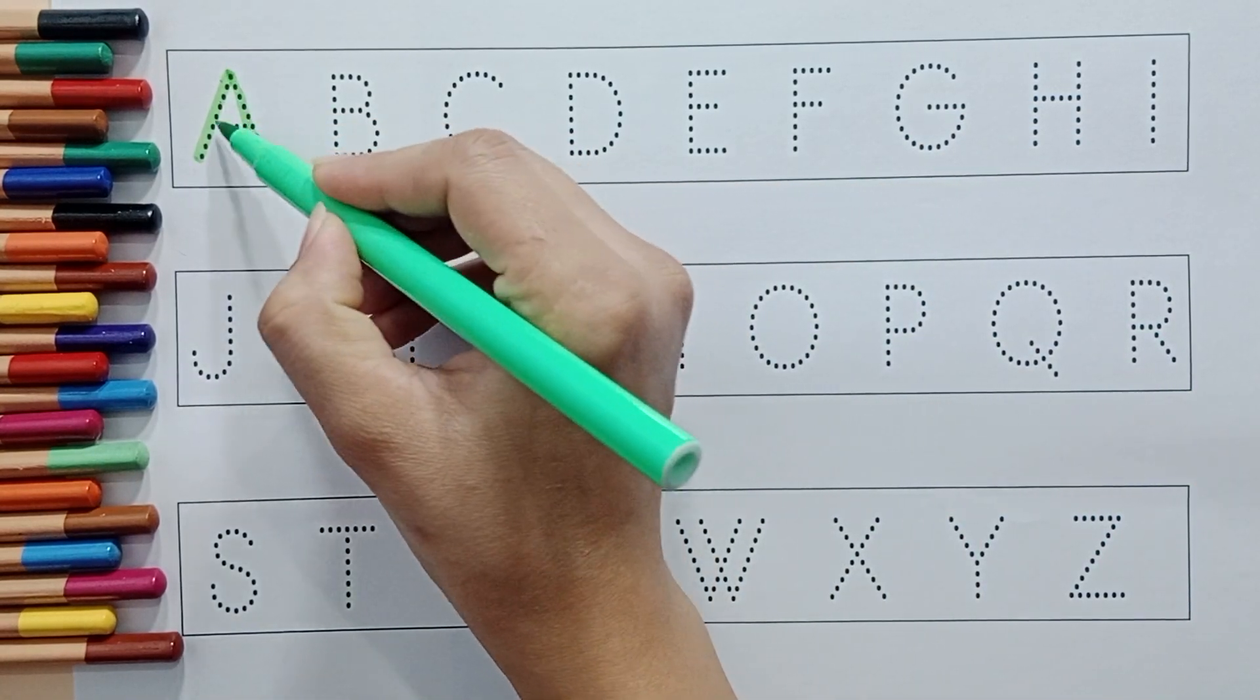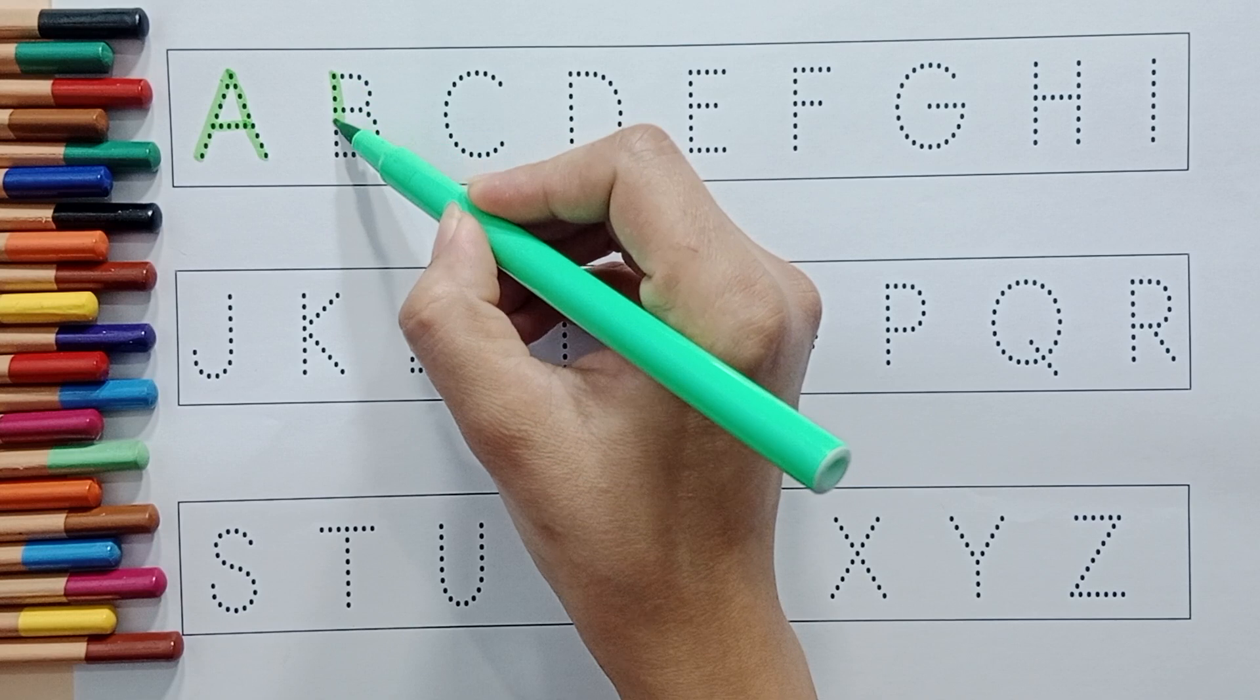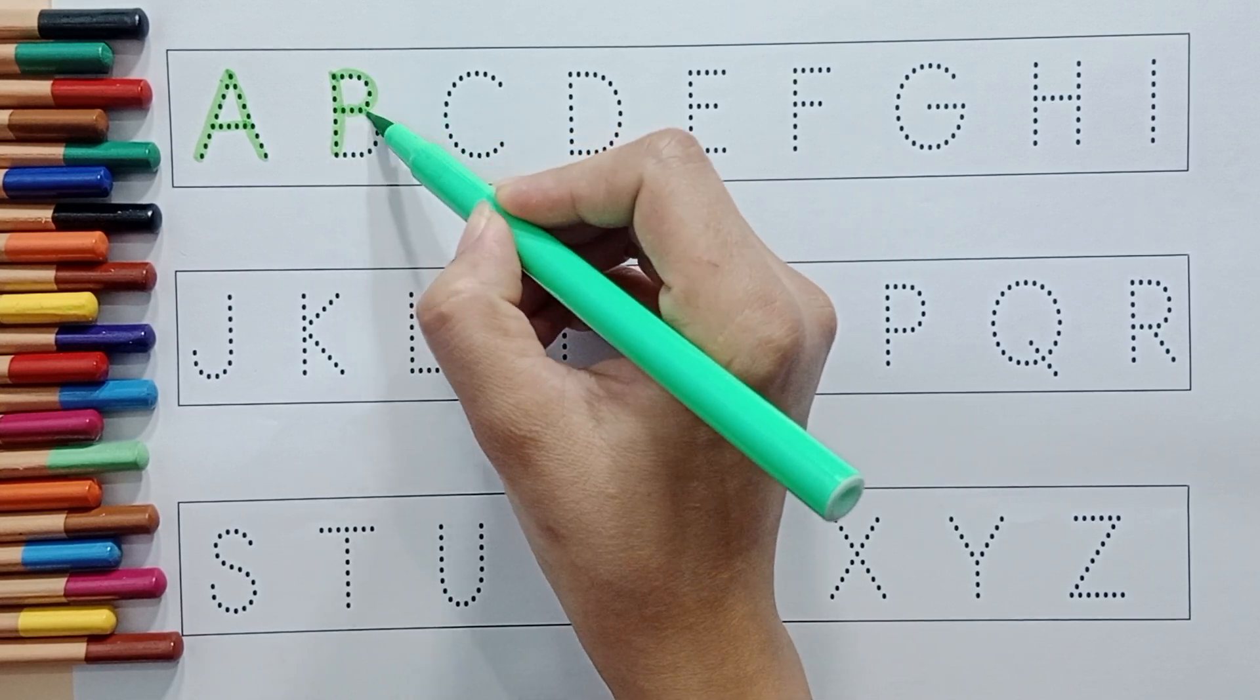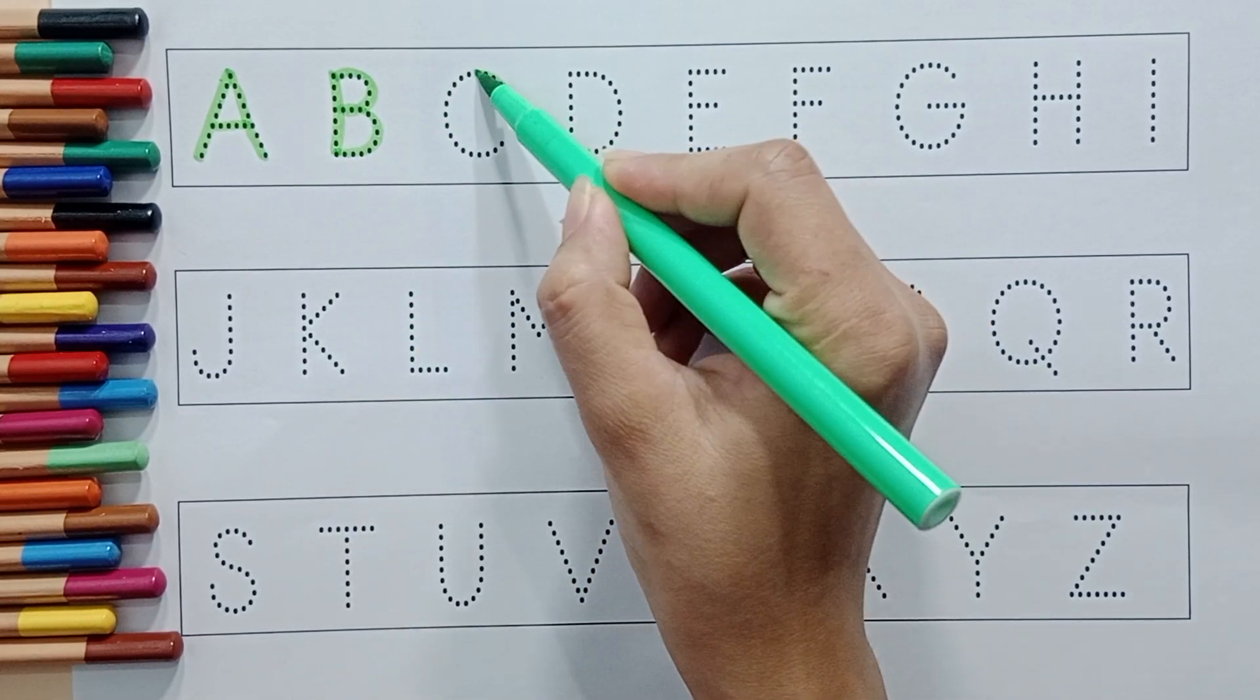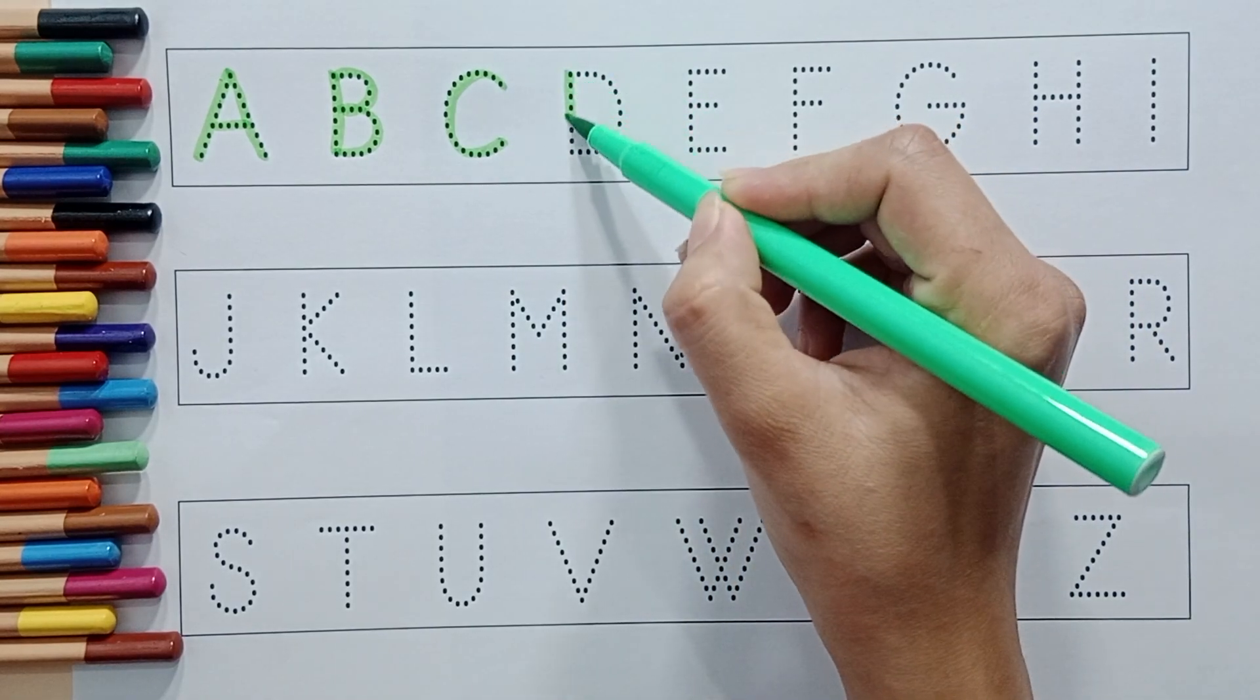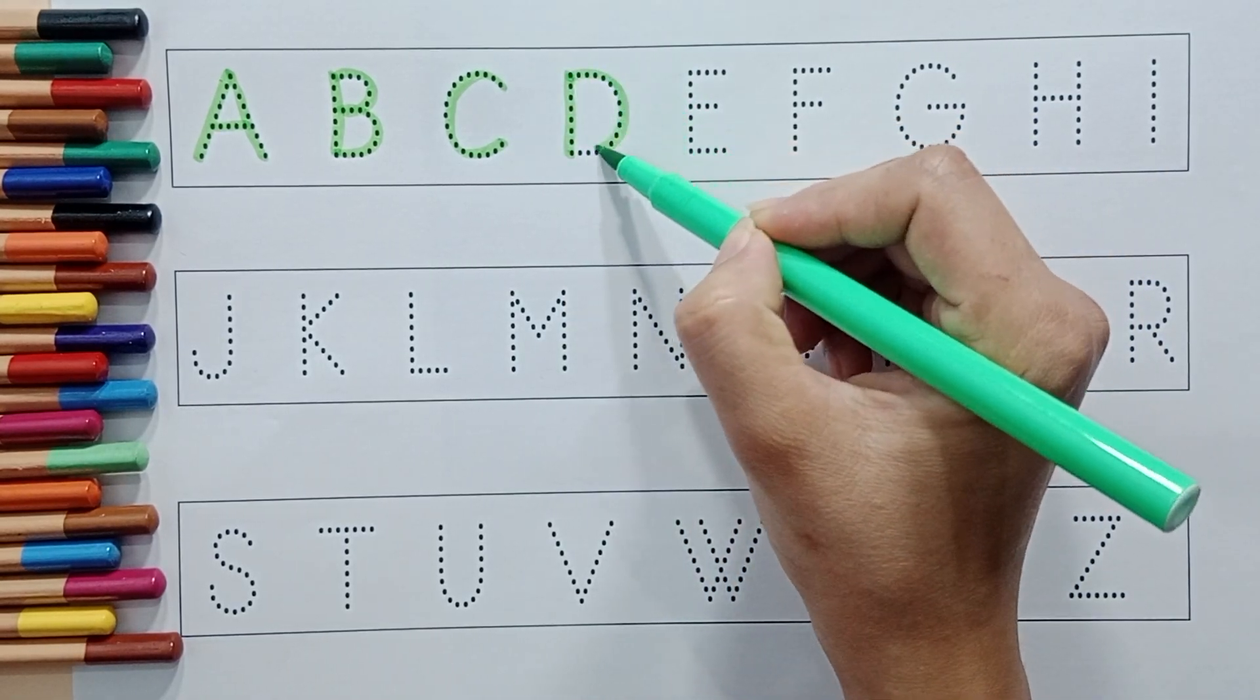A. A for apple. B. B for ball. C. C for cat. D. D for donkey.